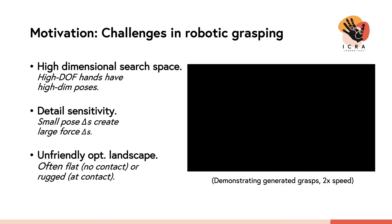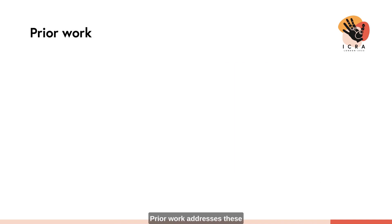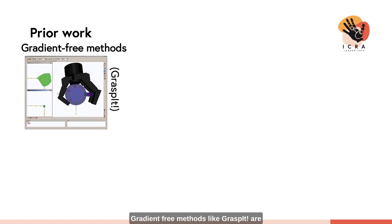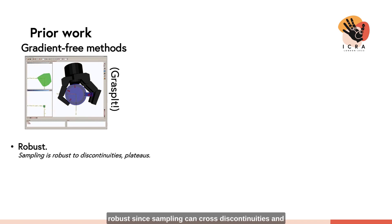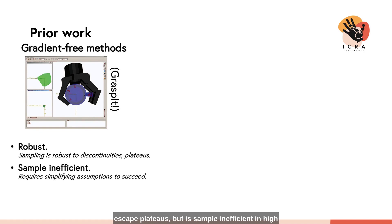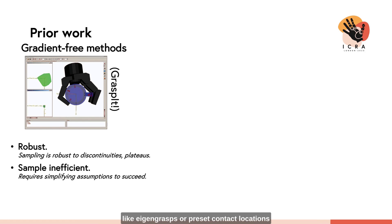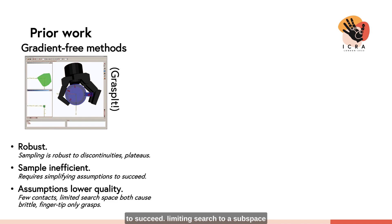Prior work addresses these difficulties with different trade-offs. Gradient-free methods like GraspIt are robust since sampling can cross discontinuities and escape plateaus, but are sample-inefficient in high-dimensional search spaces, thus requiring simplifying assumptions like eigengrasps or preset contact locations to succeed. Limiting search to a subspace or considering only a handful of contacts both tend to reduce grasp quality, leading to brittle fingertip-only grasps.